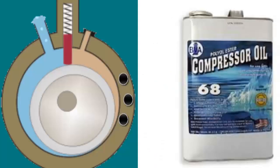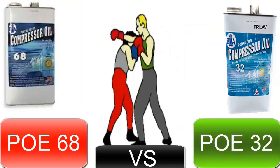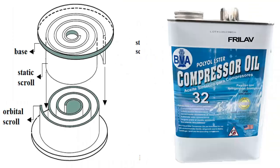10. Rotary compressors typically use PoE68, especially in air conditioning, while piston and scroll compressors more frequently use PoE32 in various applications.